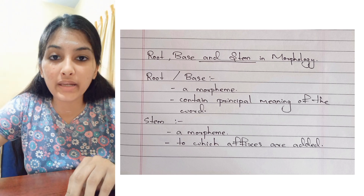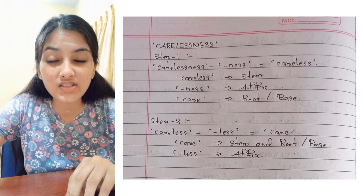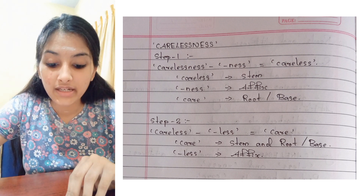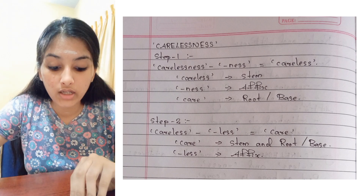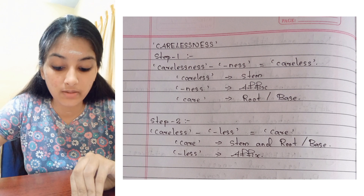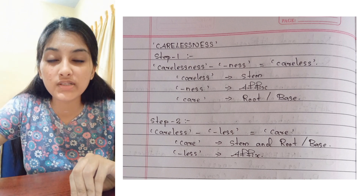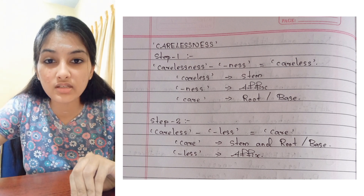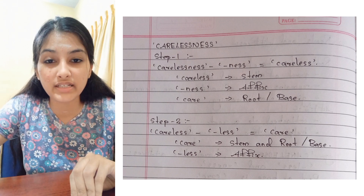Root, base, and stem in morphology. Root or base is a morpheme which contains the principal meaning of the word. Stem is the morpheme to which affixes are being added. For example, take the word 'carelessness'. Step 1: remove 'ness' from 'careless' — carelessness minus ness equals careless. Careless is the stem to which the affix 'ness' is attached; care is the root or base. Step 2: remove 'less' from 'careless' — careless minus less equals care. Care is the stem to which the affix 'less' is attached. Care is also the root. This means the word 'carelessness' has two stems: 'care' and 'careless'.